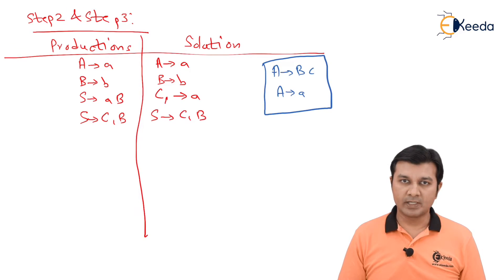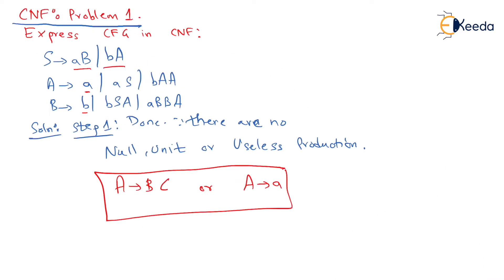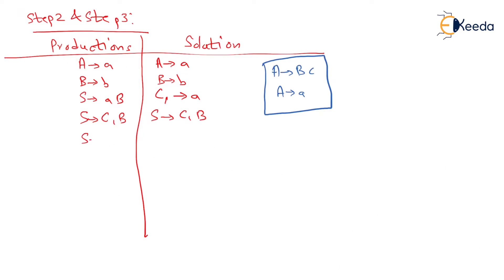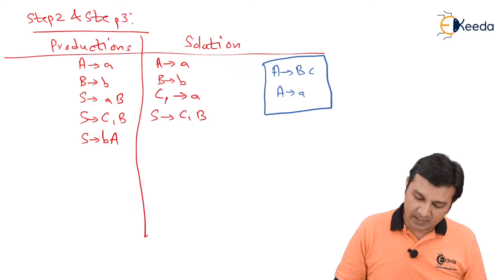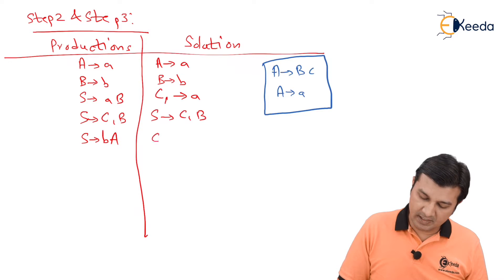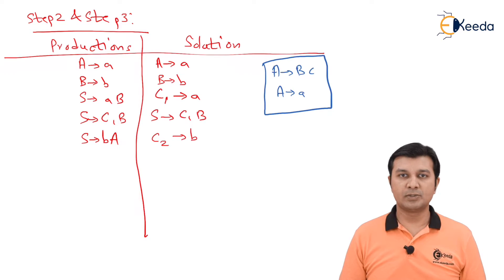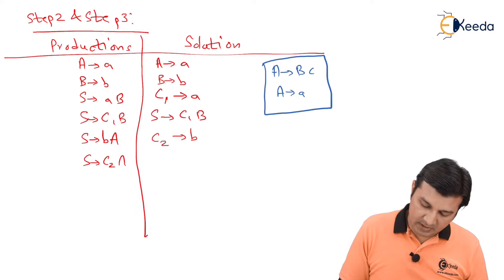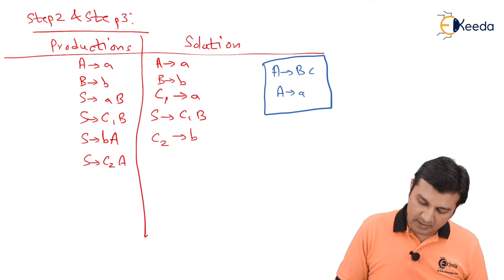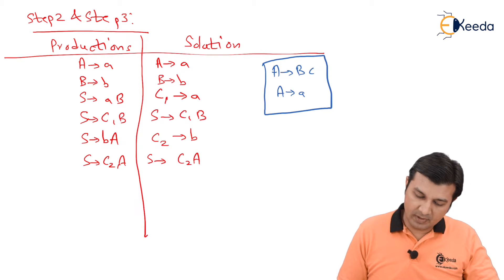Next, consider S gives BA. Since this is not in CNF form, let us introduce another temporary variable C2 giving small b. Then S gives C2A, which is in CNF form. Add S gives C2A to the solution.